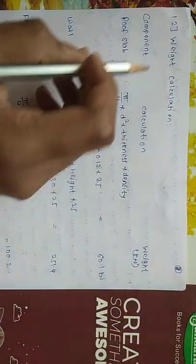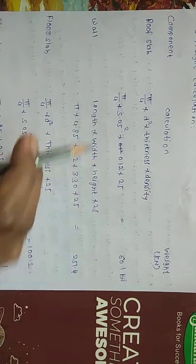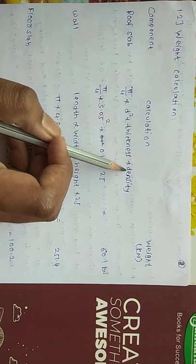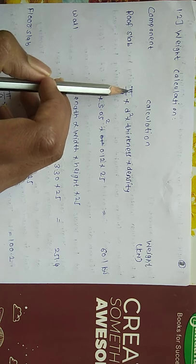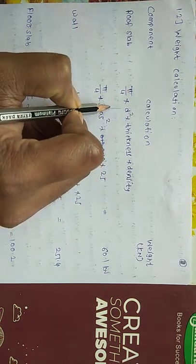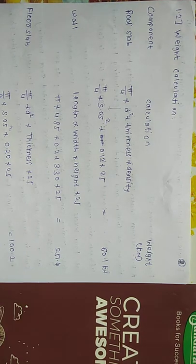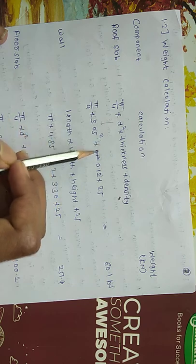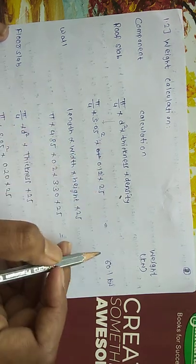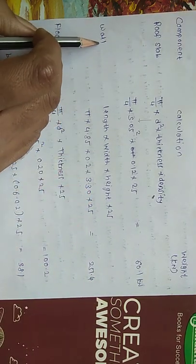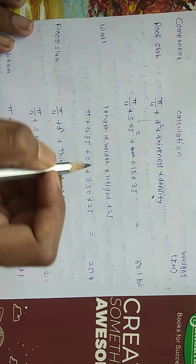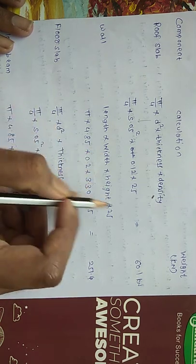Weight calculation: starting from the top, roof slab dead weight = area × thickness × density = (π/4 × 5.05²) × 0.12 × 25 = 60.1 kN. Note that diameter used is 4.65 + wall thickness = 5.05 m. For the walls: dead load = π × 4.85 × 0.2 × 3.30 × 25.